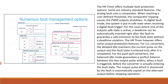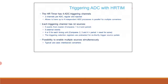The HR timer has four ADC triggering channels, with two channels per ADC for regular and injected sequences. This allows up to four independent ADC processes in parallel for multiple converters. Each triggering channel has 32 sources including five from the master timer, five from external events, and four or five from each timing unit. It is possible to simultaneously enable multiple sources for a unique trigger when the various trigger instances are clearly defined, as is typical in multi-phase converters.